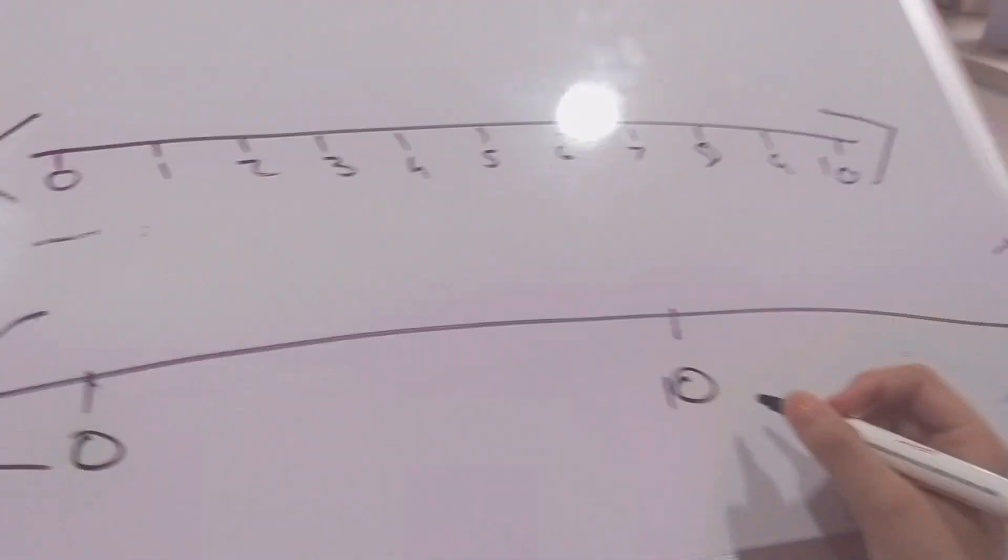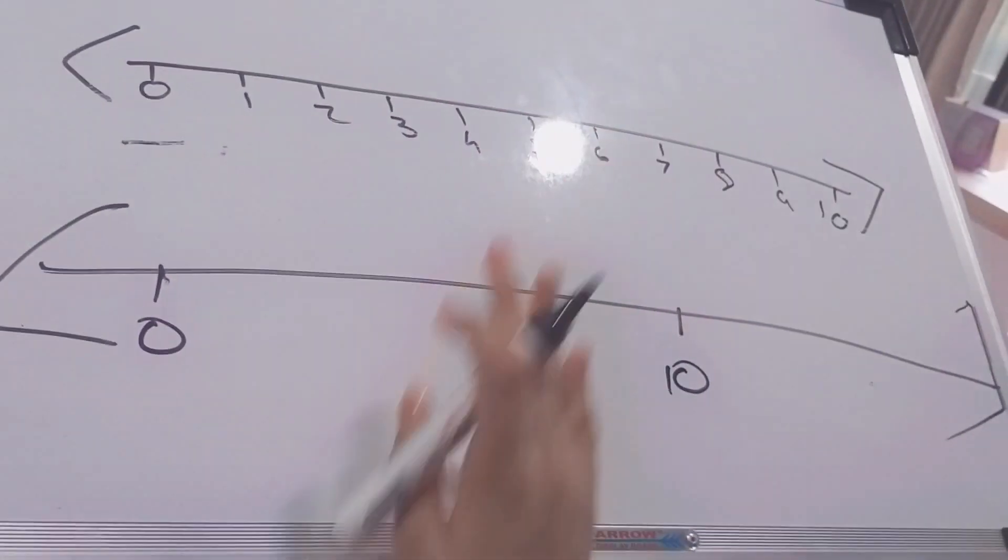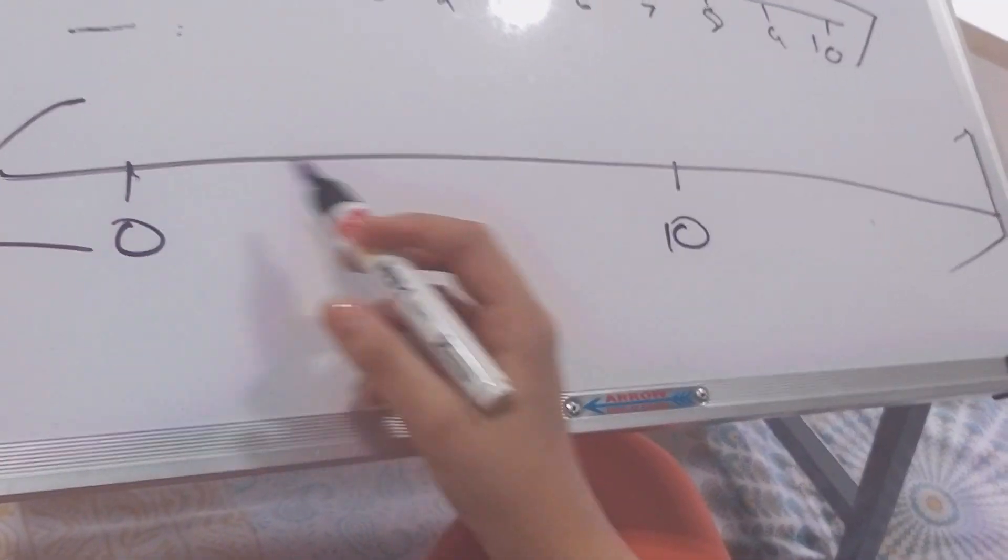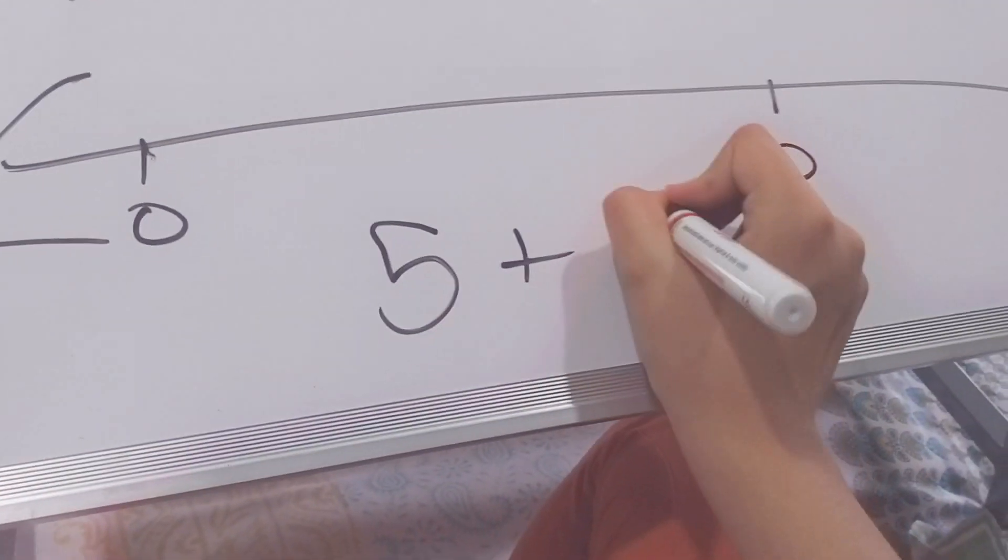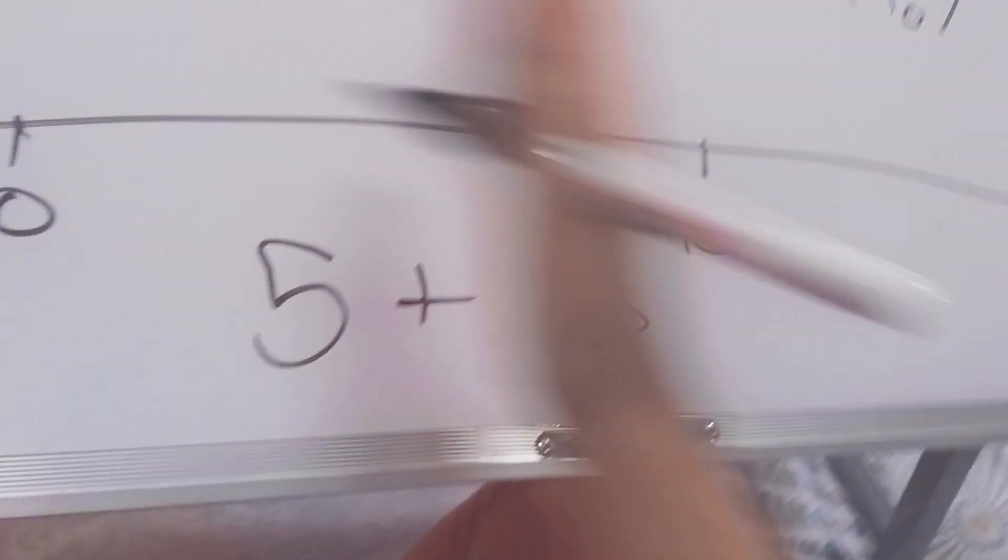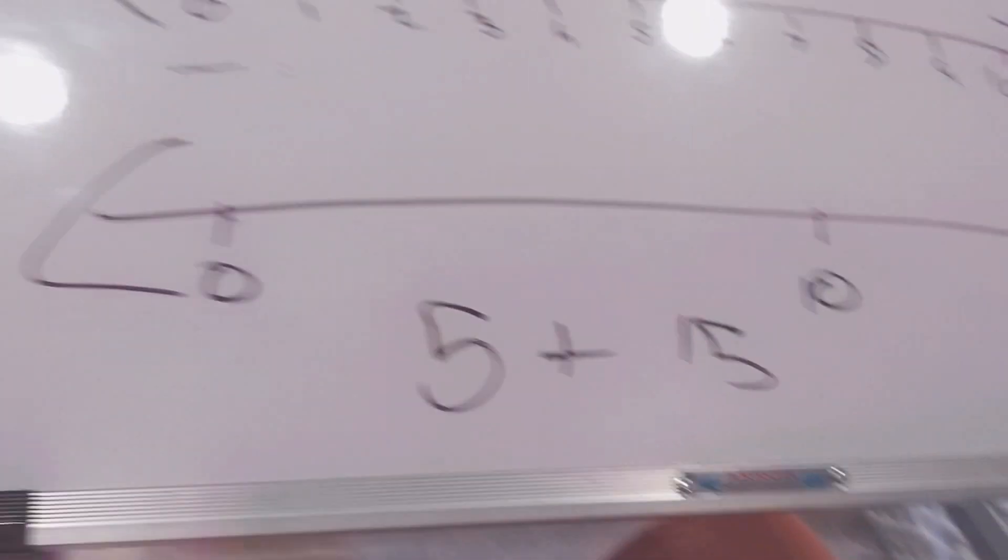Now supposing you have to draw some number lines ready made only so that your time is not wasting. Then you have to see this one. Supposing it's five plus fifteen. Five plus fifteen is twenty. So you have to draw till twenty. So you can extend it easily over here till twenty.